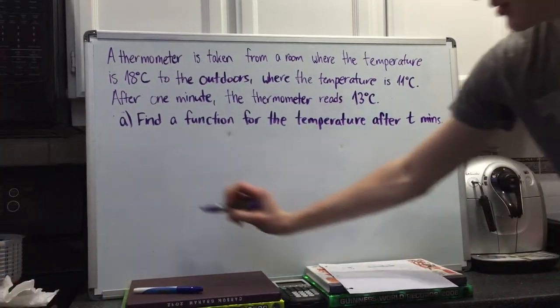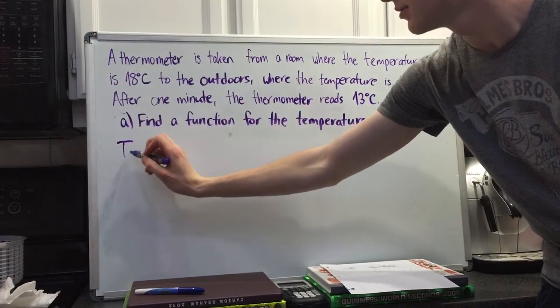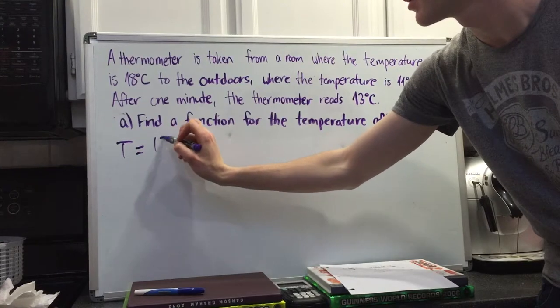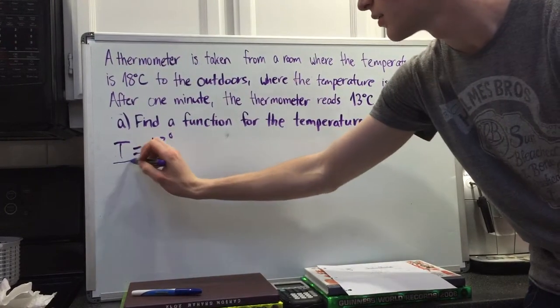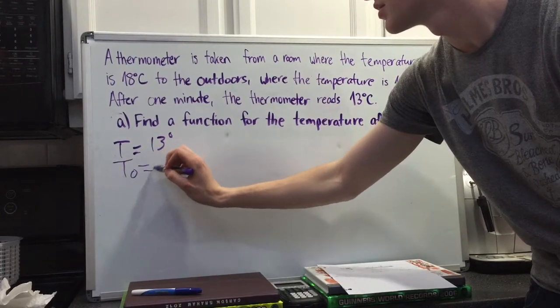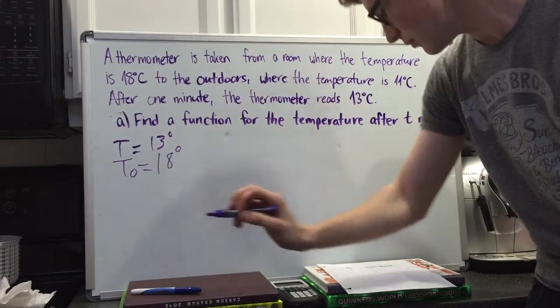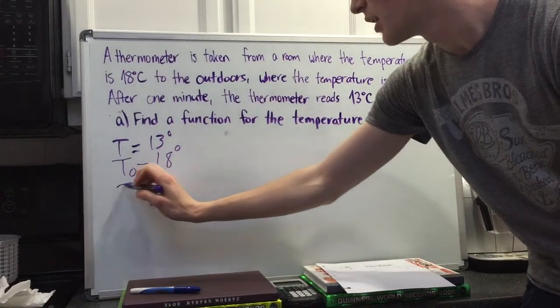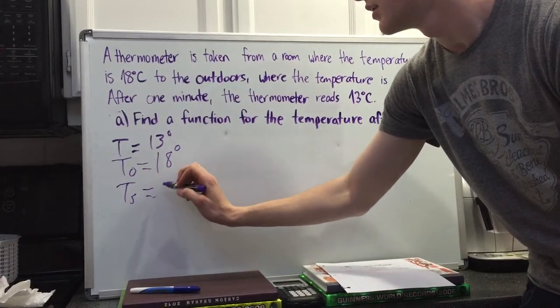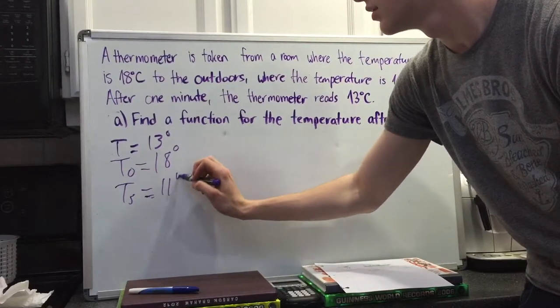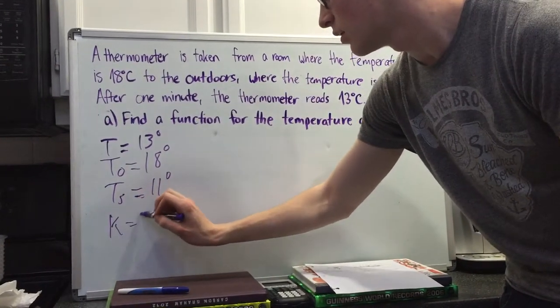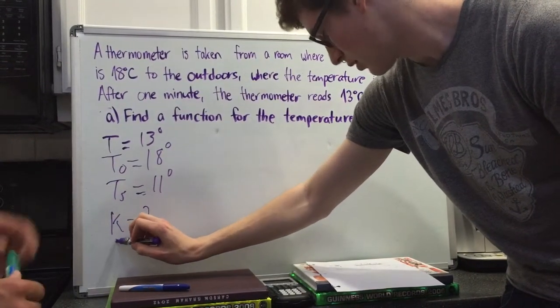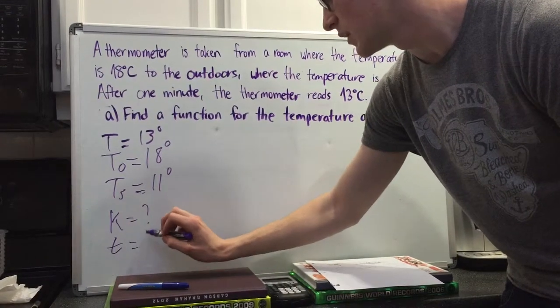Okay, so our first variable is T, which is the final temperature, 13 degrees. Our second variable is the initial temperature, which is 18 degrees. Our temperature outside is 11 degrees. Our K value is unknown and our time is 1 minute.